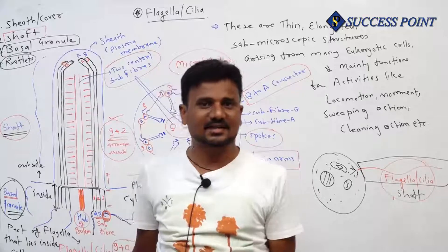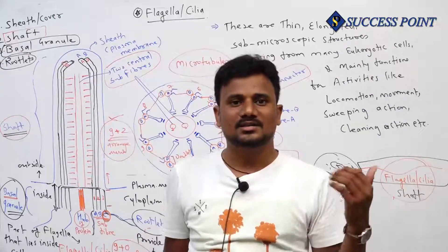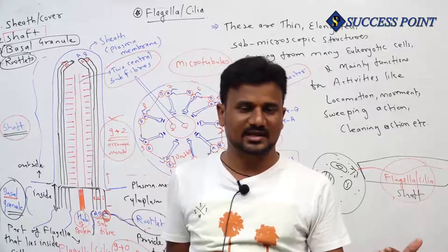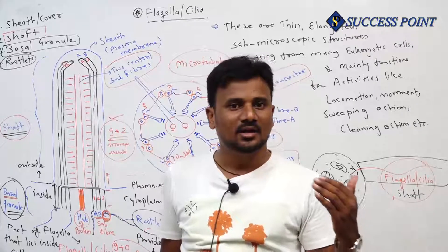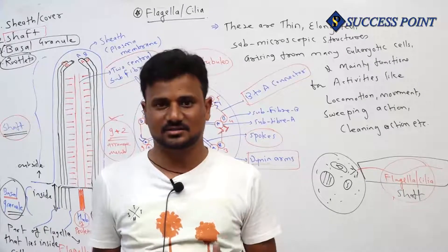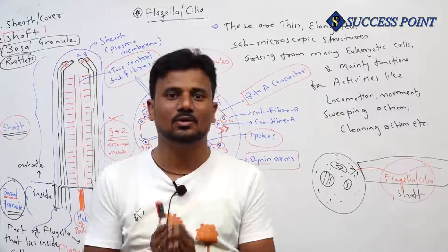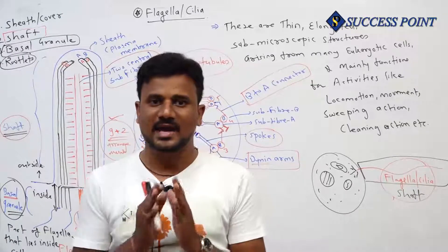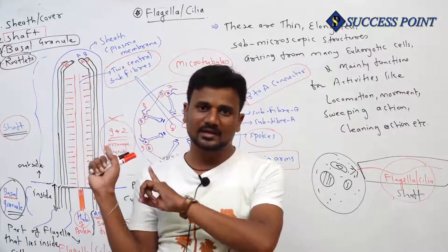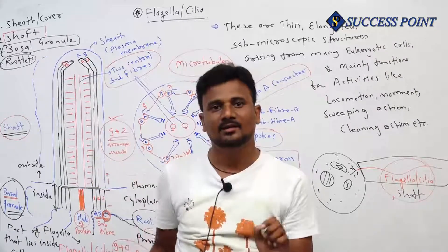These are the common functions associated with flagella and cilia. Next time we meet, we will discuss centrioles — a structure found in eukaryotic cells. We will see its significant structure and function in the next class. As far as this class is concerned, we are done. Have a proper look at the structure drawn on the board. Thank you.